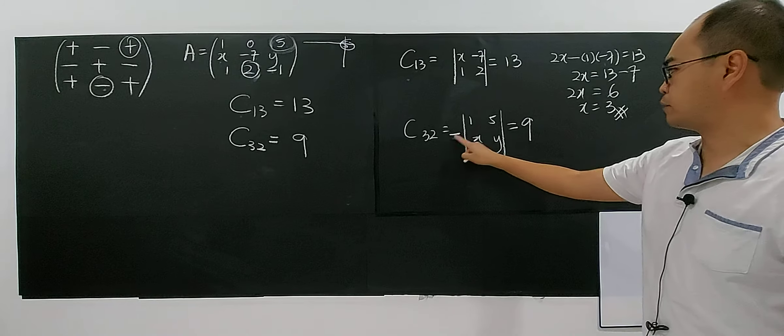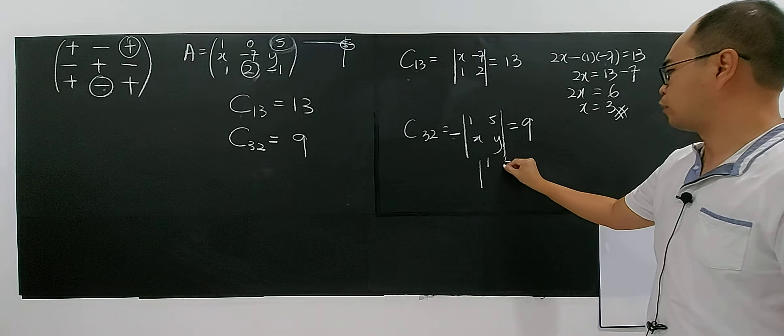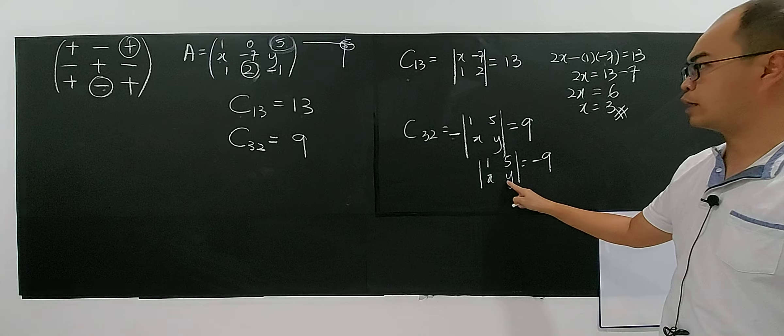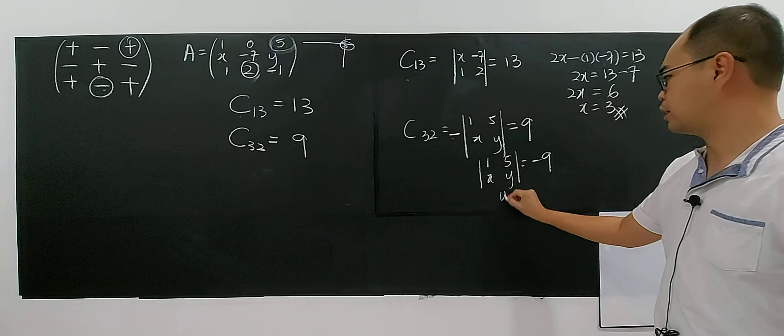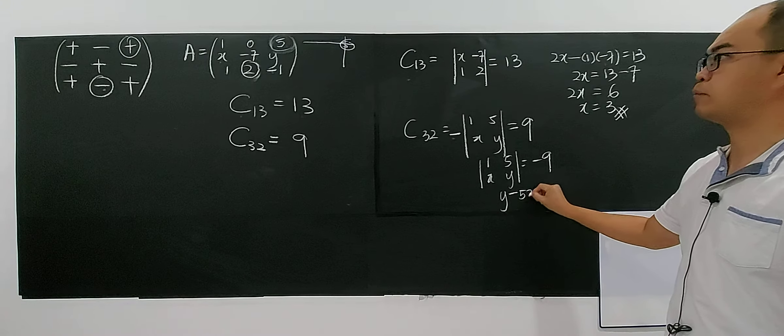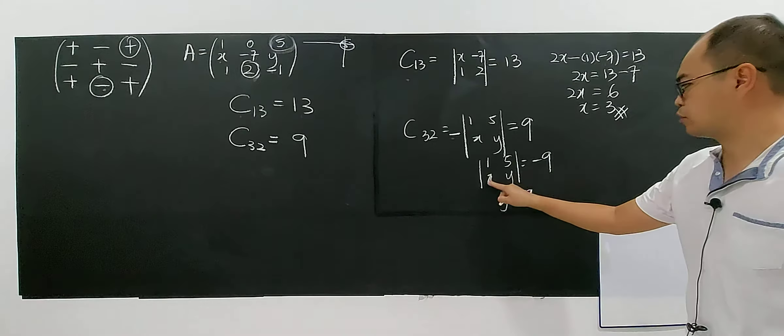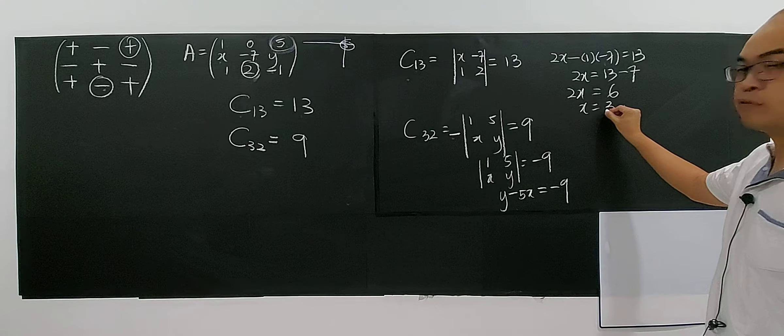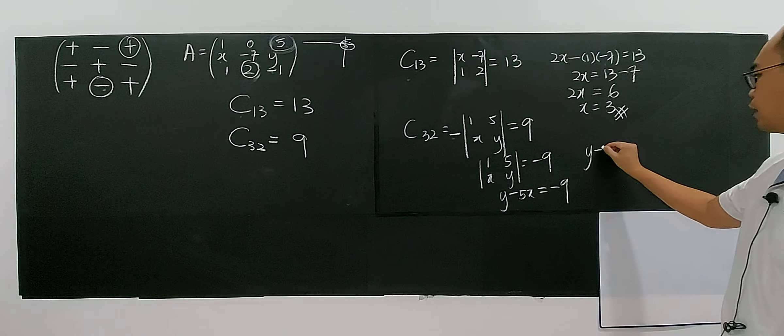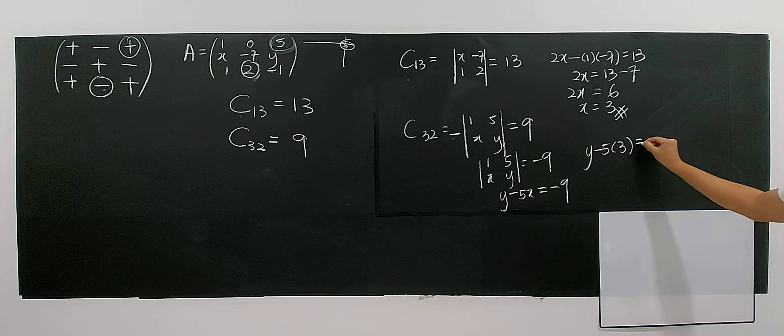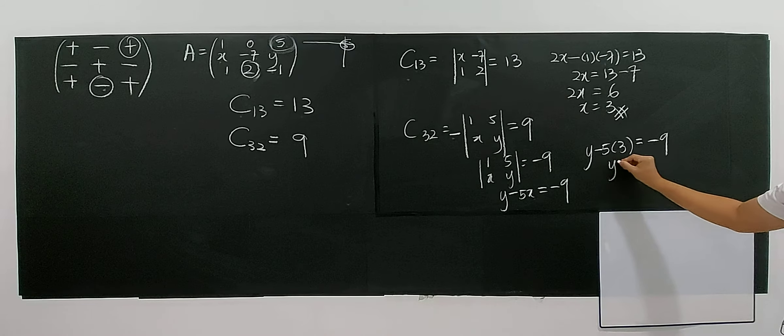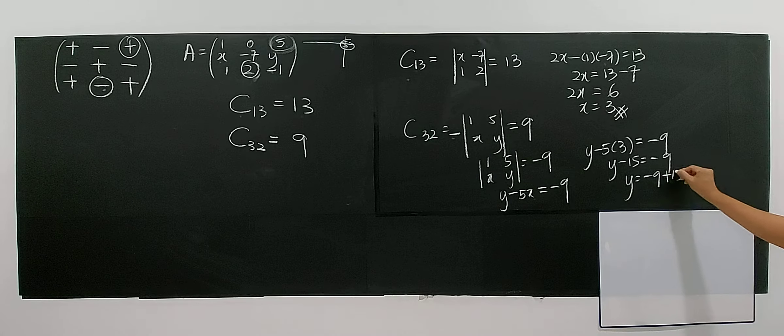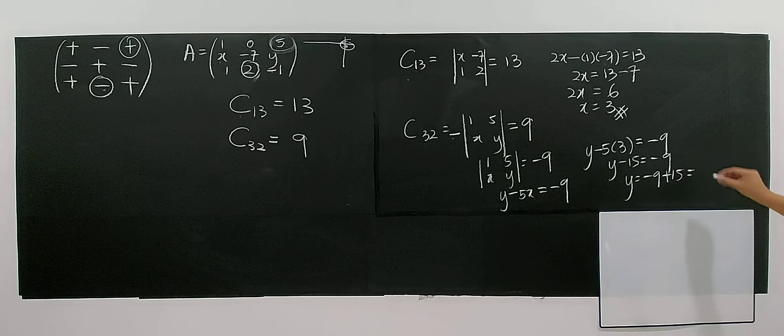So, negative 9 divided by negative, you multiply negative both sides. You have 1 times y minus 5 times x equals negative 9. 1 times y minus 5 multiplied with x, right? 5 multiplied with x minus. So, equals to negative 9. You have know the value of x is 3. So, y minus 5 times 3 equals negative 9. So, minus 15 equals negative 9. So, y equals negative 9 plus 15. You have 6.